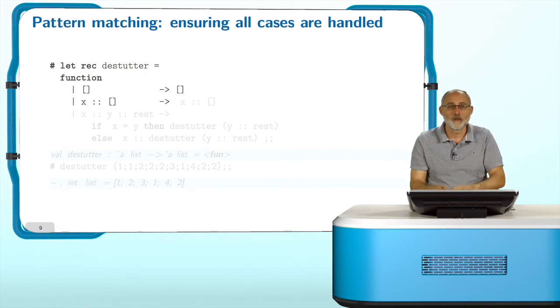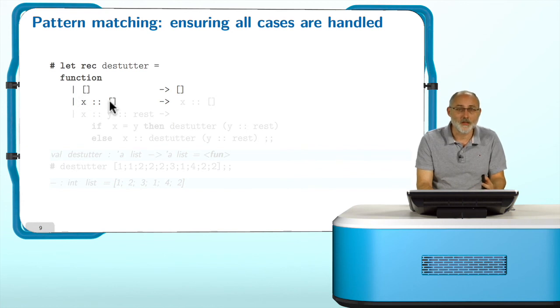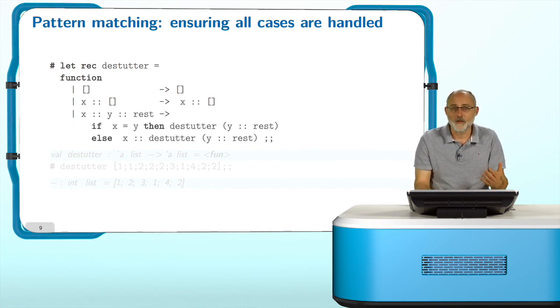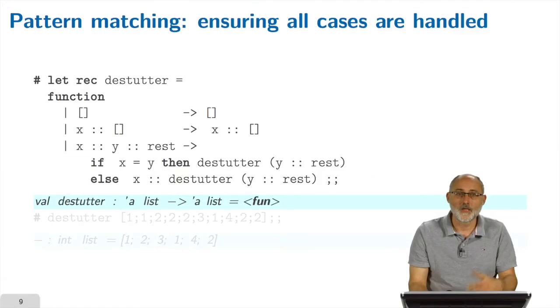So let's do it again. So for the empty list, I do nothing. For the list that has just one element, I need to say what happens. And what happens in this case? Well, if a list has just one element, there is no stuttering, so there is nothing to do. I return the same list as it is. And the last clause is the same as before. Now, the compiler is happy and says, okay, all cases are covered. You have defined a function which is well typed, takes lists to lists, and we can test it.